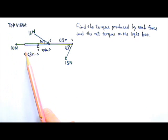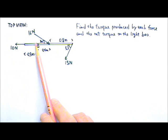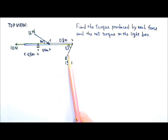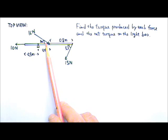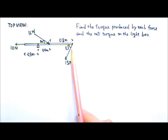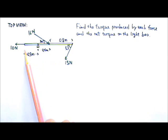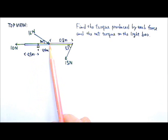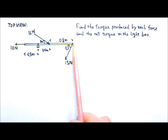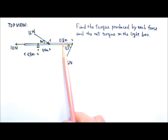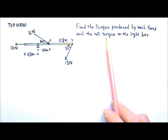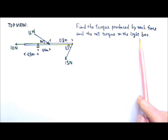In this top view, there is a bar with a fulcrum right over here, and three forces are acting on the bar. The angle here is 30 degrees and the angle here is 53 degrees. The distance from the left end to the fulcrum is 0.5 meters, from the fulcrum to here is 0.4 meters, and from here to the right end of the bar is 0.8 meters. We want to find the torque produced by each force and the net torque on the light bar.